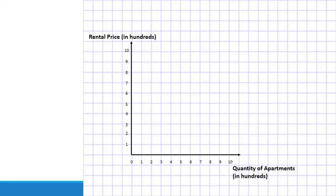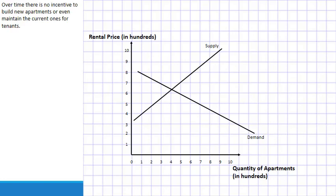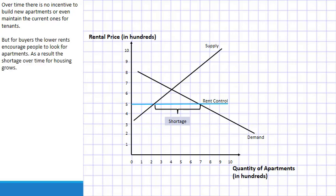In the long run, demand becomes more elastic and supply also becomes more elastic. Over time, there's no incentive to build new apartments or even maintain current ones. The shortage becomes larger and larger. Lower rents encourage more people to look for apartments, so demand for housing increases, but the supply of housing does not increase because there's no real incentive to create new apartments when the price is too low. The shortage grows significantly over time.